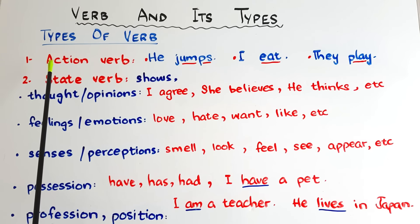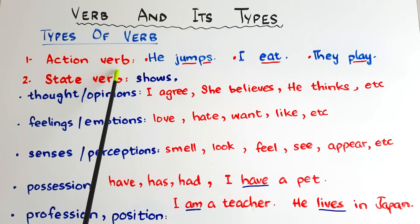Let's start learning about the types of verbs. The first is action verb — words that show actions. Like: 'he jumps,' 'I eat,' 'they play.' Jumps, eat, and play are action verbs. The second type is state verb. As the name shows, state verbs do not show any action; they are still, they are stative.